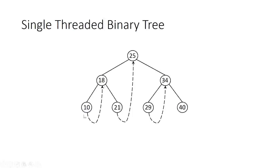The successor of 10 in in-order traversal is 18, and after 21 we have 25. After 18, we have 21 and a right child pointer is already there, so we need not give any thread there. After 25, we have 34 as successor. For nodes that already have a right child pointer, no right thread is needed. Only nodes without a right child will have a right thread.